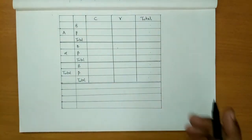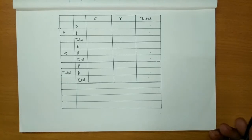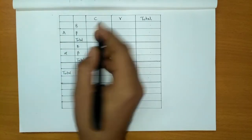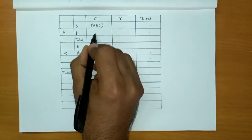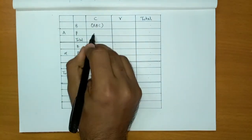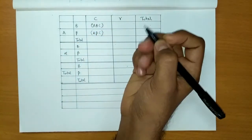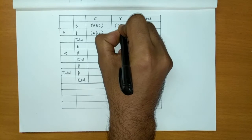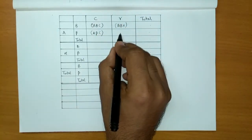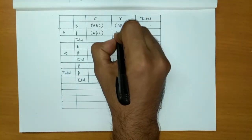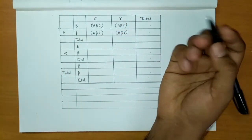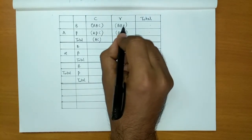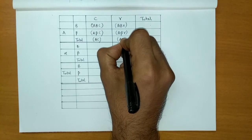Now we fill up the frequencies. In the first cell of Block A the frequency is A, B, C. The next cell has frequency A, B, C. Then we have frequency A, B, Gamma. Below that, frequency A, Beta, Gamma. Now if we add these two vertically, the common letters give us A, Gamma. So we write frequency A, Gamma.